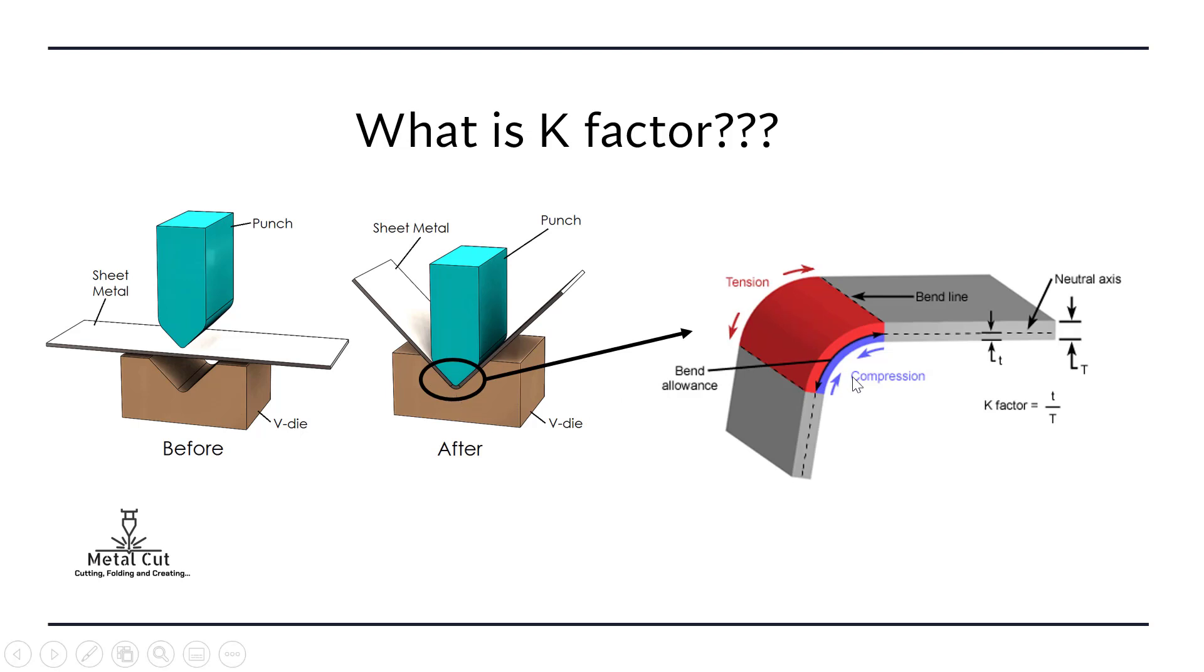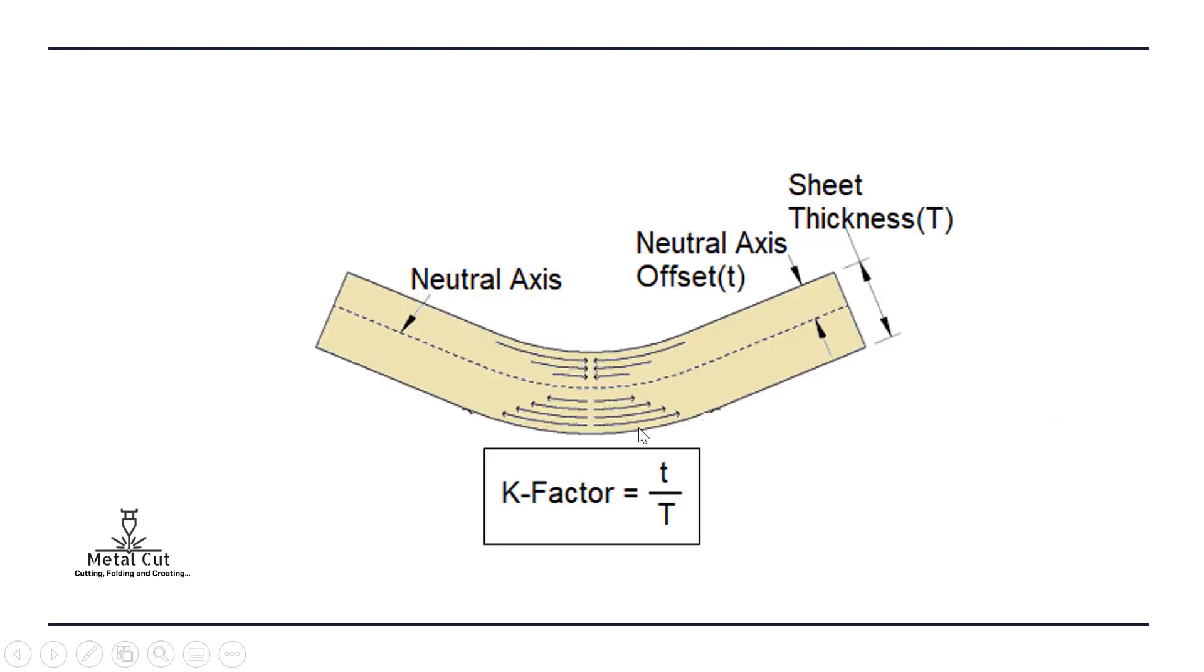So that plane is called neutral plane and that axis is known as neutral axis. To understand this more properly, let's look at this image and see: this is a plane, this is an axis where there is no compression, no tension.